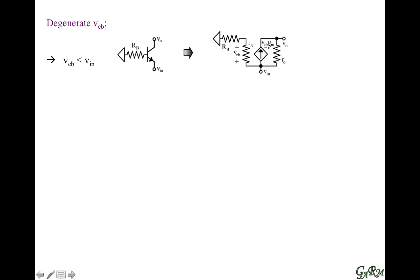This is the gm current flowing from the emitter to the collector. And then we have ro, the output resistance, which goes from the emitter to the collector as well. Having that, we want to map this out into its equivalent two-port network, which will have an input resistance, a short-circuit transconductance gain, and a short-circuit output resistance. With these three parameters, we have the two-port equivalent circuit for the base-degenerated common base transistor.